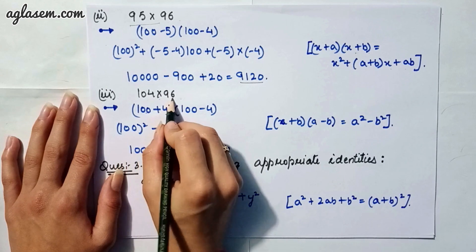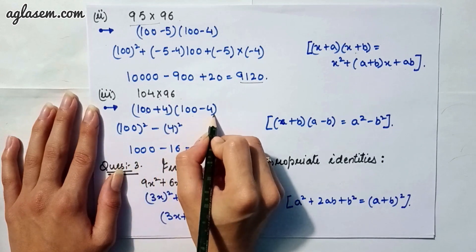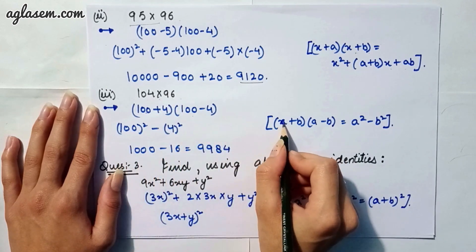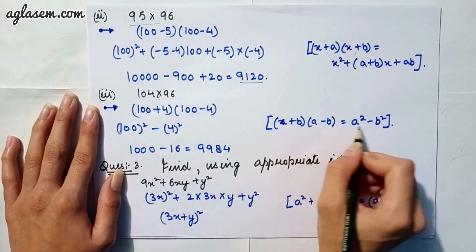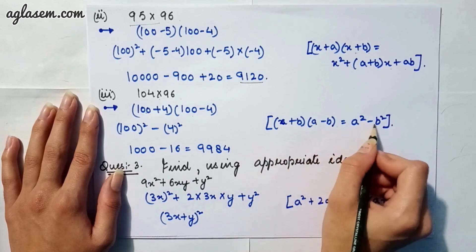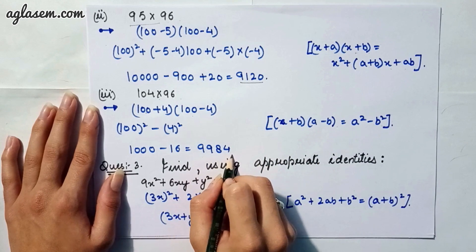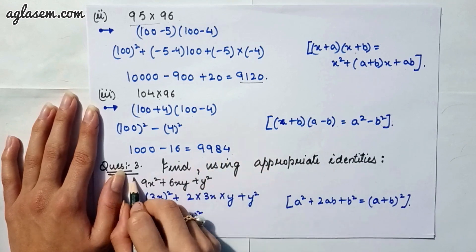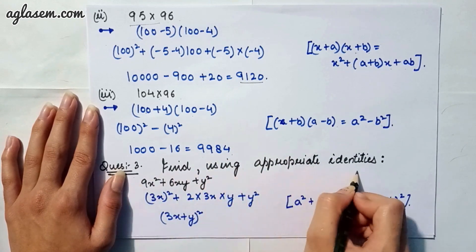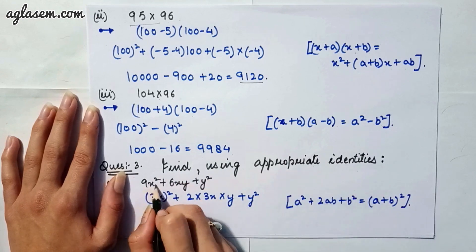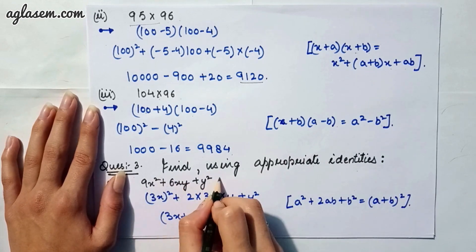Moving to our third part: 104 × 96. We write 104 as (100 + 4) and 96 as (100 − 4). Applying the identity (a + b)(a − b) = a² − b², the answer is 9,984.